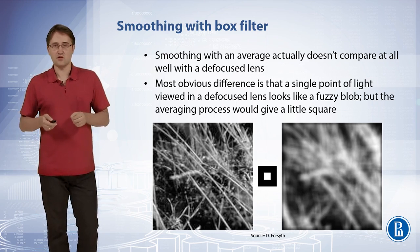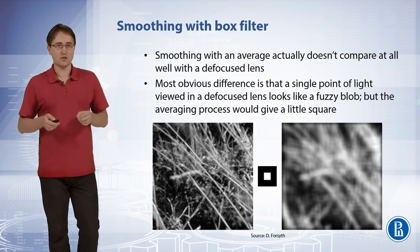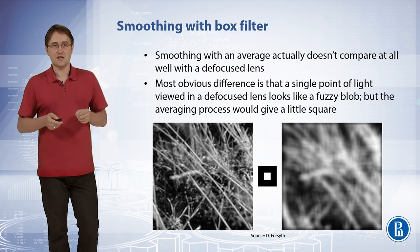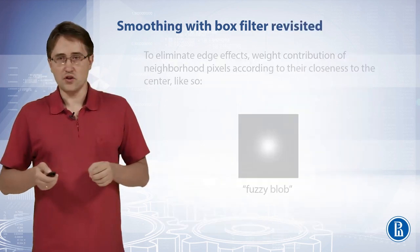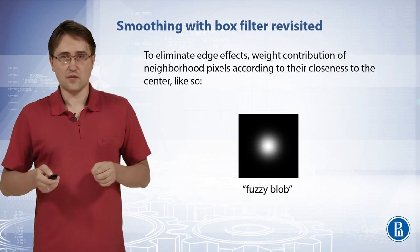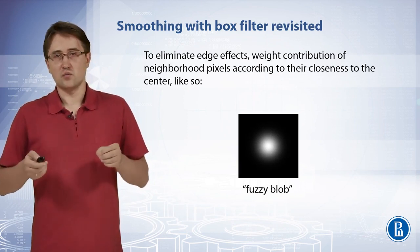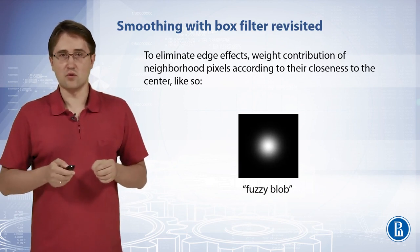If we try to apply averaging to a single point of light, we will get a little square. If we see the same point of light through a defocused lens, it will look like a fuzzy blob. We want to devise a filter kernel that will produce the same effect as a defocused lens when applied to a point of light. To reach this result and eliminate edge effects, the weight contribution of neighborhood pixels should be according to their closeness to the center, like this image of a fuzzy blob.